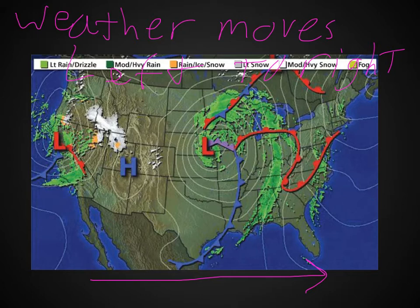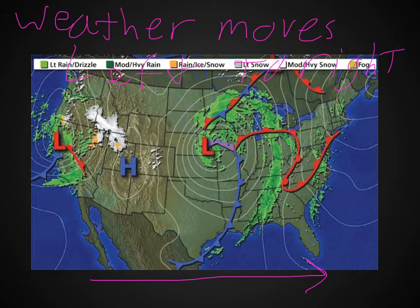Over here where Chicago is, that low pressure system is going to move in. It's going to get some more storms probably the next day or two, and then eventually it will hit this clear area with clear skies. We will be doing quite a bit of practicing on predicting weather in class the next few days.